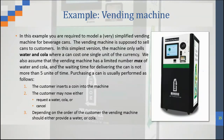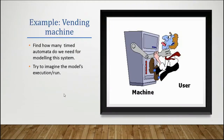Here we have an example of a vending machine. Let's check our knowledge so far — can we build a timed automata for a vending machine? It has only two types of products: water and cola. The user inserts coins and may request water or cola, or cancel the order. Based on the customer's request, the machine provides either water or cola.